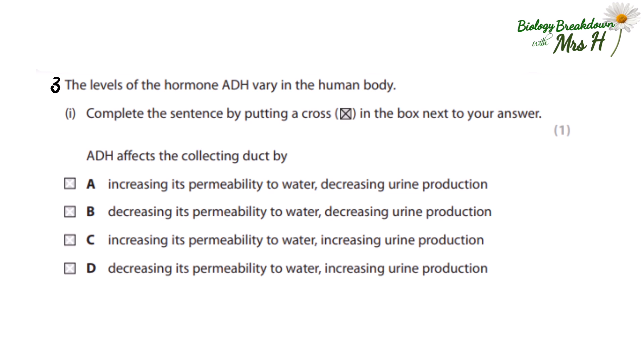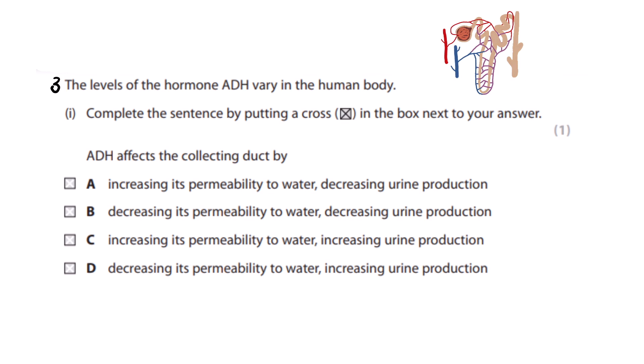Number three: the levels of hormone ADH vary in the human body. ADH affects the collecting duct by increasing its permeability to water, which decreases urine production. We know it increases the permeability, so let's discount B and D. Option C says increasing its permeability to water, increasing urine production — that doesn't make sense. ADH makes the collecting duct more permeable to water, so more water is reabsorbed into the blood, therefore less water goes to the bladder as urine. So the answer is definitely A.